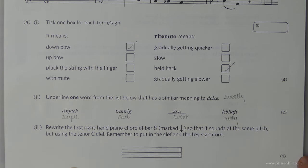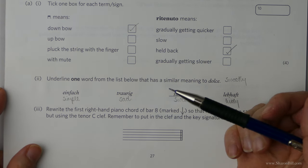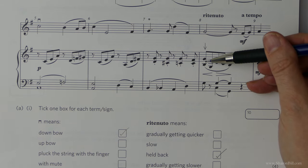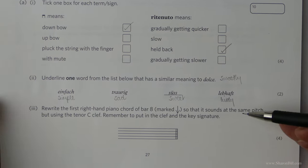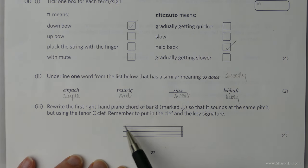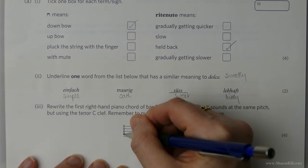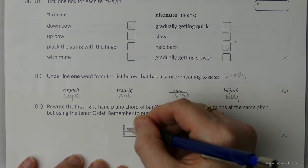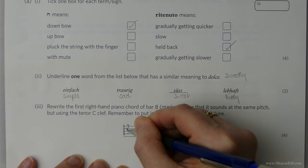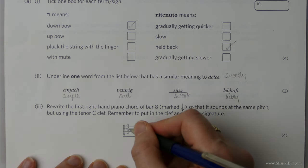Now the next question. We're asked to rewrite the first right hand piano chord of bar 8. It's marked with an arrow. And we need to make sure it's at the same pitch, so no jumping octaves. But we're using the tenor clef. And so we're going to have to change the clef and the key signature here. So if I pop my double bar lines, and then the tenor clef is centered around this second line down. So we build our clef around that. And then our key signature of one sharp must come lower because the clef is so high. C, B, A, G, F sharp. There we go.